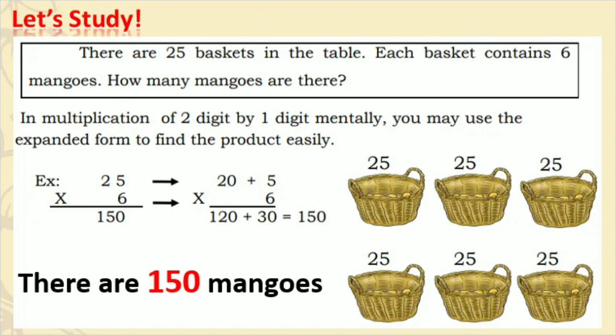Naunawaan nyo ba mga bata? Sige, ulitin nga natin. Para makapag-multiply mentally, maaaring natin gamitin ang expanded form. Isipin nyo lang na ang 25 ay maaaring maging 20 plus 5. Kaya, 6 times 5 ay 30, at 6 times 20 ay 120. Kapag pinagsama ang 120 at 30, ang sagot ay 150.